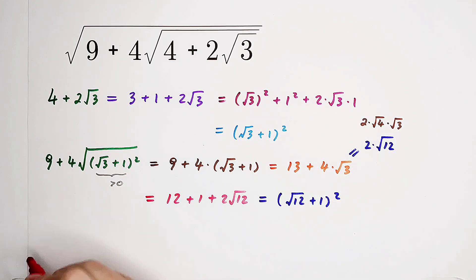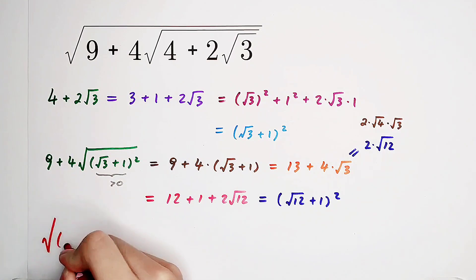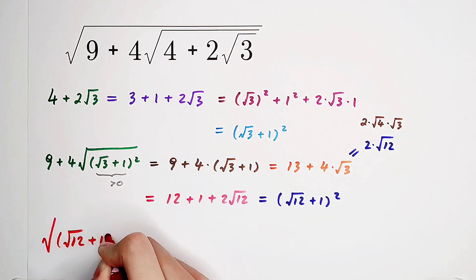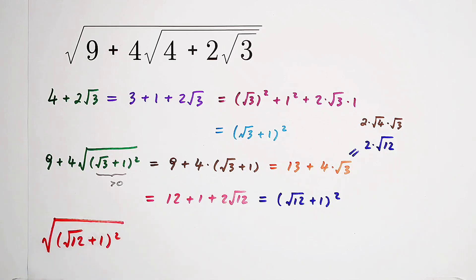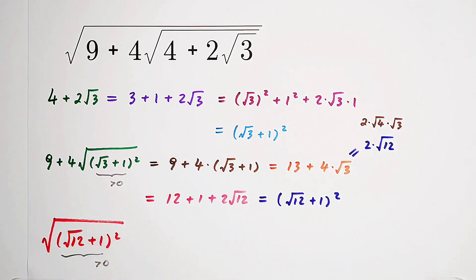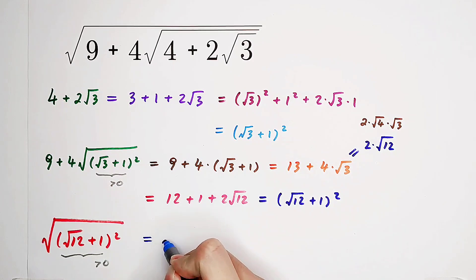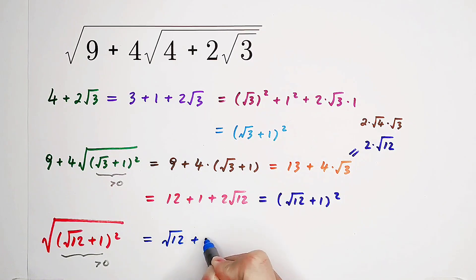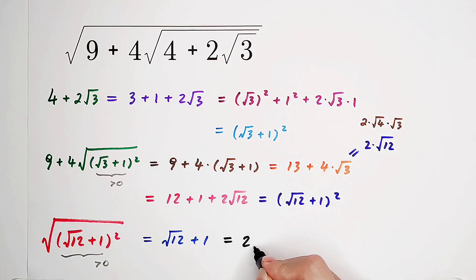So the entire thing under the largest square root is just square root of 12 plus 1, all squared. Our answer is square root of 12 plus 1, squared, which simplifies to square root of 12 plus 1. And since square root of 12 is 2 times square root of 3, the answer is 2 times square root of 3 plus 1.